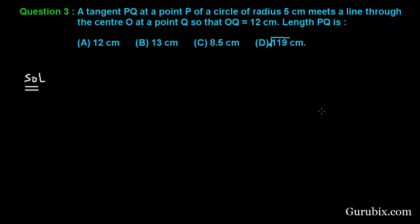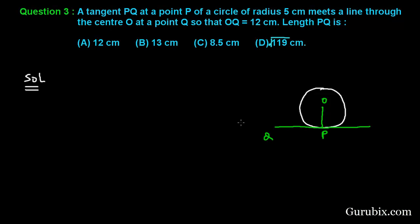Let us see how to solve it. First of all, let us draw a rough sketch of the figure. Suppose this is the circle with center O, this is the tangent, and here we have a point Q. This point is P, and if we join OQ, then OQ is 12 centimeters and the radius OP is 5 centimeters.